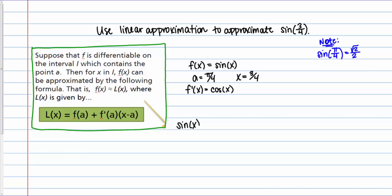So then, sine of X is approximately equal to the linear approximation given by F of A. And here my A is pi over 4. Plus F prime of A. So F prime of pi over 4. Times X minus pi over 4. And then if we fill in our specific functions. I have sine of pi over 4. Plus cosine of pi over 4. Times X minus pi over 4. Now this is going to be valid for any X value. And it's going to be a good approximation for any X value close to pi over 4.